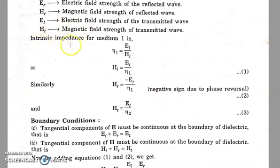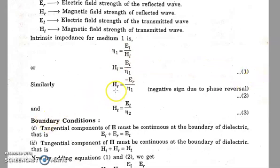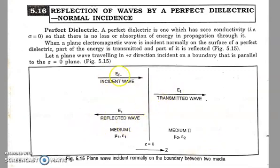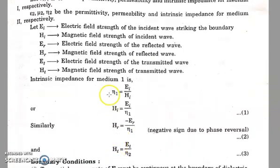From the definition of intrinsic impedance for medium 1, eta1 = EI / HI, and from here HI = EI / eta1 — mark this as equation 1. Similarly, HR = -ER / eta1, since from the figure the incident and reflected waves both belong to medium 1. The negative sign is due to the phase reversal, or 180-degree phase difference, between EI and ER — mark this as equation 2.